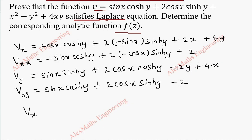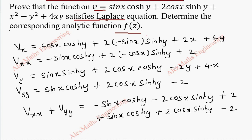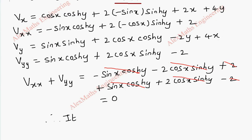We are going to add Vxx and Vyy. So while adding, let's copy Vxx: minus sin x into cosh y minus 2 cos x into sinh y plus 2, with that plus sin x into cosh y plus 2 cos x into sinh y minus 2. So minus sin x cosh y plus sin x cosh y cancel, and 2 cos x sinh y minus 2 cos x sinh y plus 2 and minus 2 cancel. After cancelling we get 0, so it satisfies the Laplace equation.